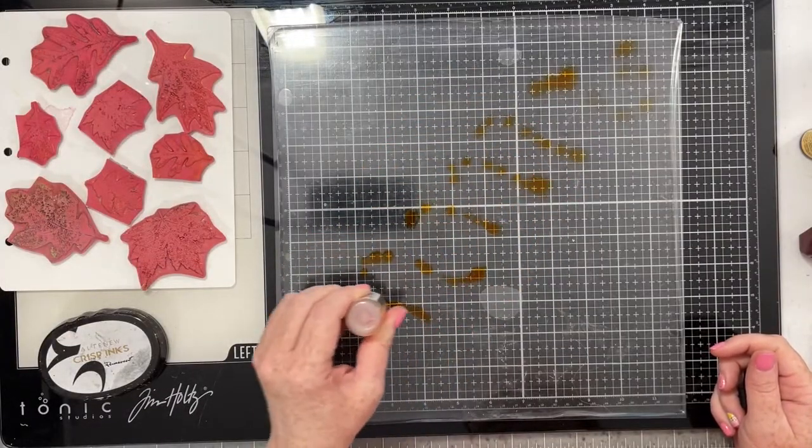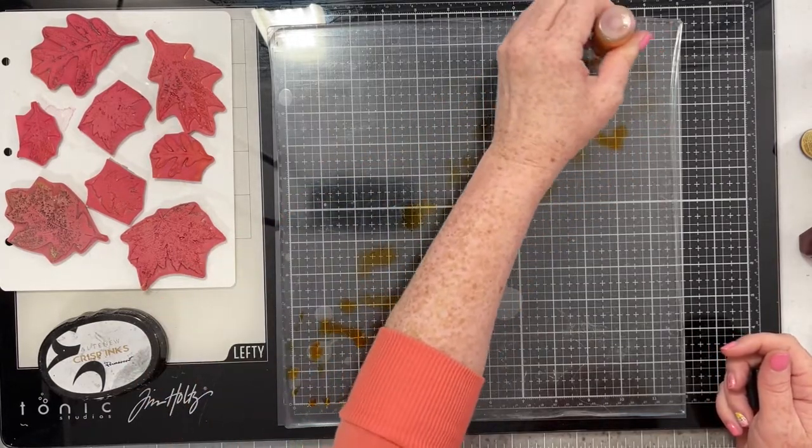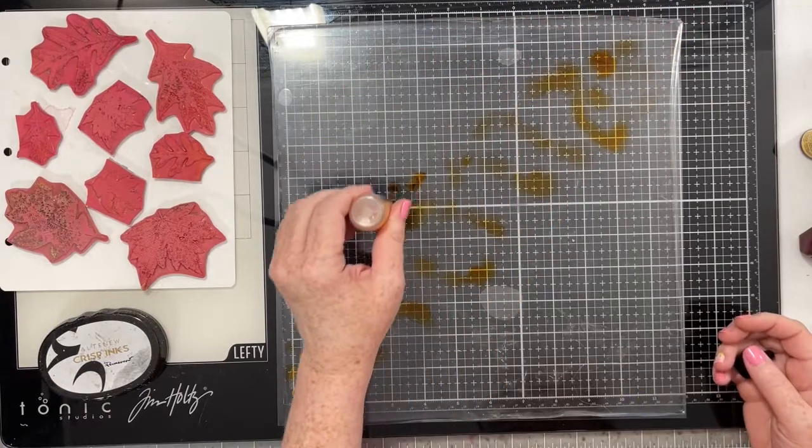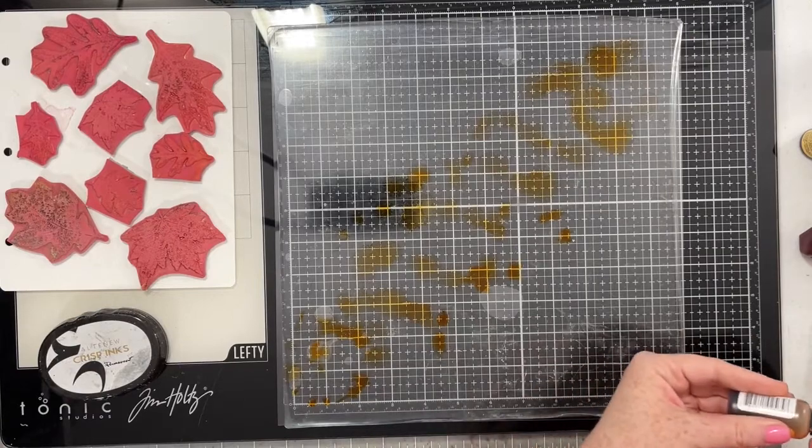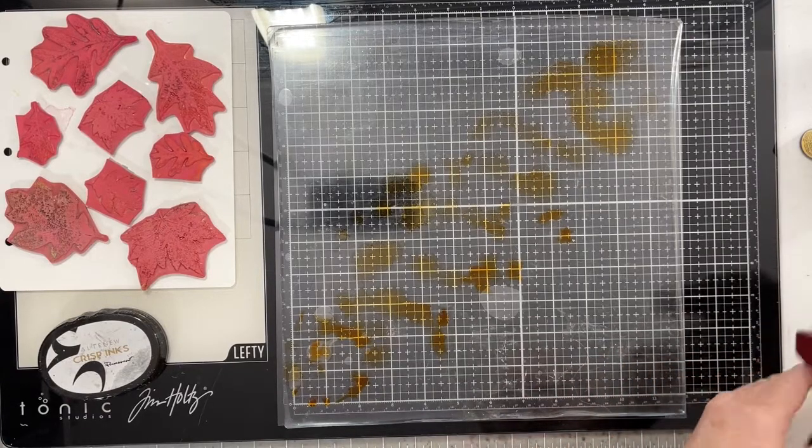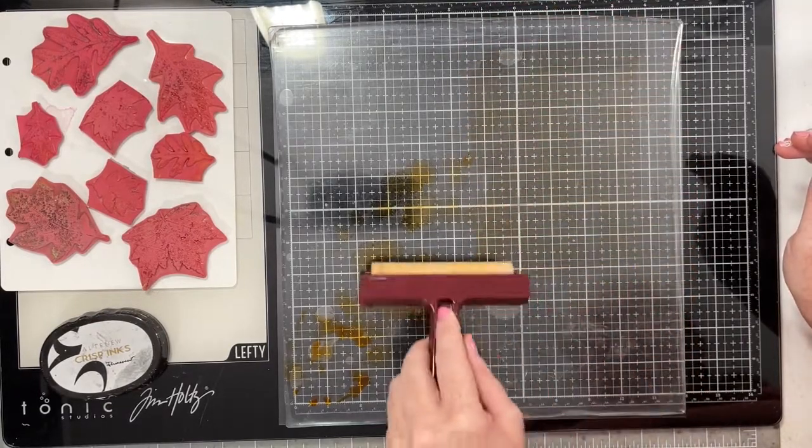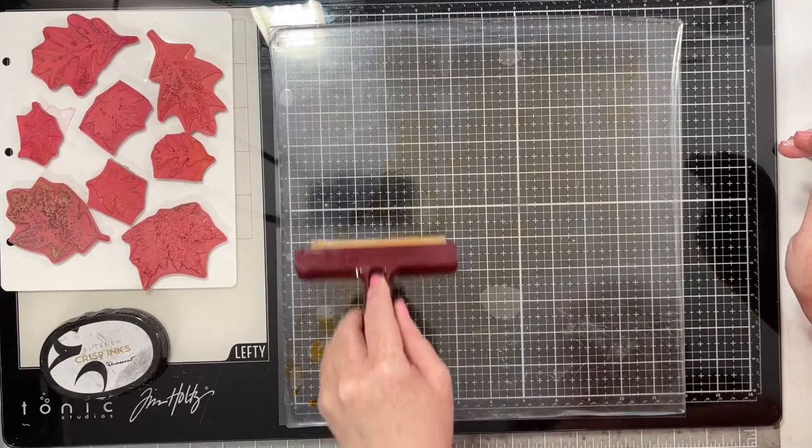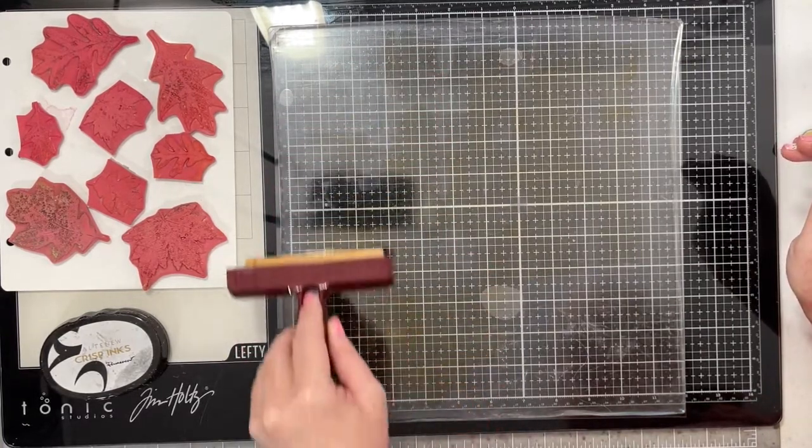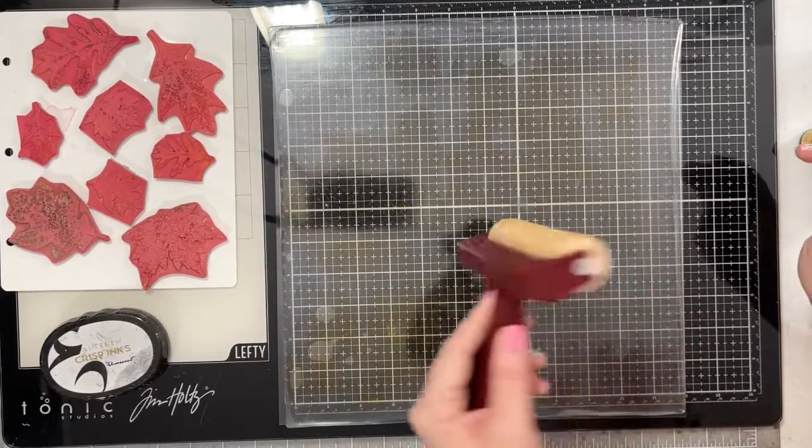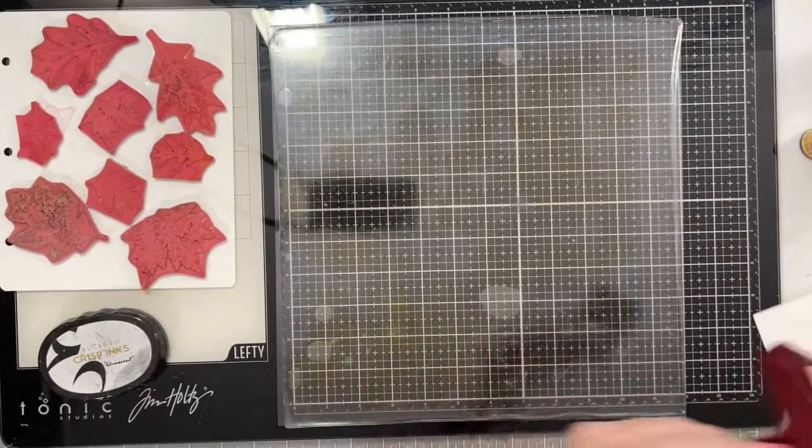So for today's blog post and video, I wanted to play a little bit with alcohol inks and my gel press. And you totally can use alcohol inks on gel presses. One of the best things about this technique is that you don't need any kind of special paper. So what I'm doing here is I'm taking my alcohol inks, I'm putting them onto my gel press, just swirling them around wherever they want to go.